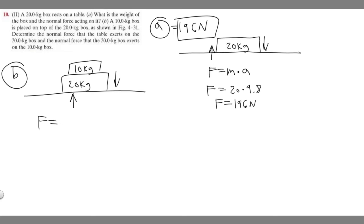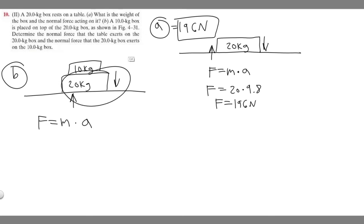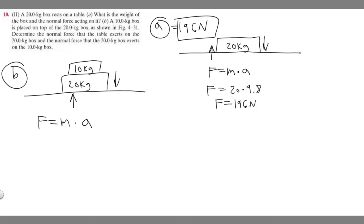To solve this, we use force equals mass times acceleration. We need to find the total force the table is exerting, which means adding up the force from the 20 kg box and the force from the 10 kg box. We already know the 20 kg box exerts 196 newtons, so now we just need to account for the 10 kg box.